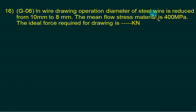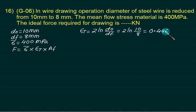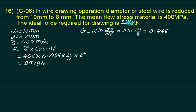In a wire drawing operation, diameter of steel wire is reduced from 10 mm to 8 mm. D0 is 10 mm, DF is 8 mm. Average flow stress is 400 Mega Pascal. We want to find ideal drawing force. Drawing force is given by average stress multiplied by true strain multiplied by final area. True strain is 2 times ln of 10 by 8, equals 0.446. Force is 400 times 0.446 times pi by 4 times 8 square equals 8973. Answer is 8.9 Kilo Newton.